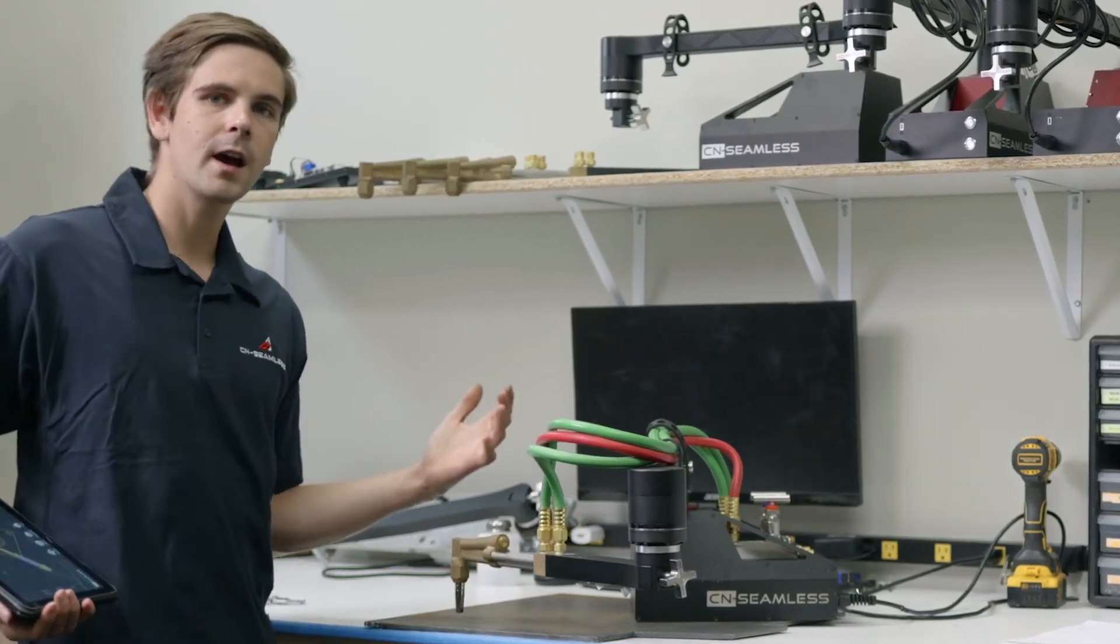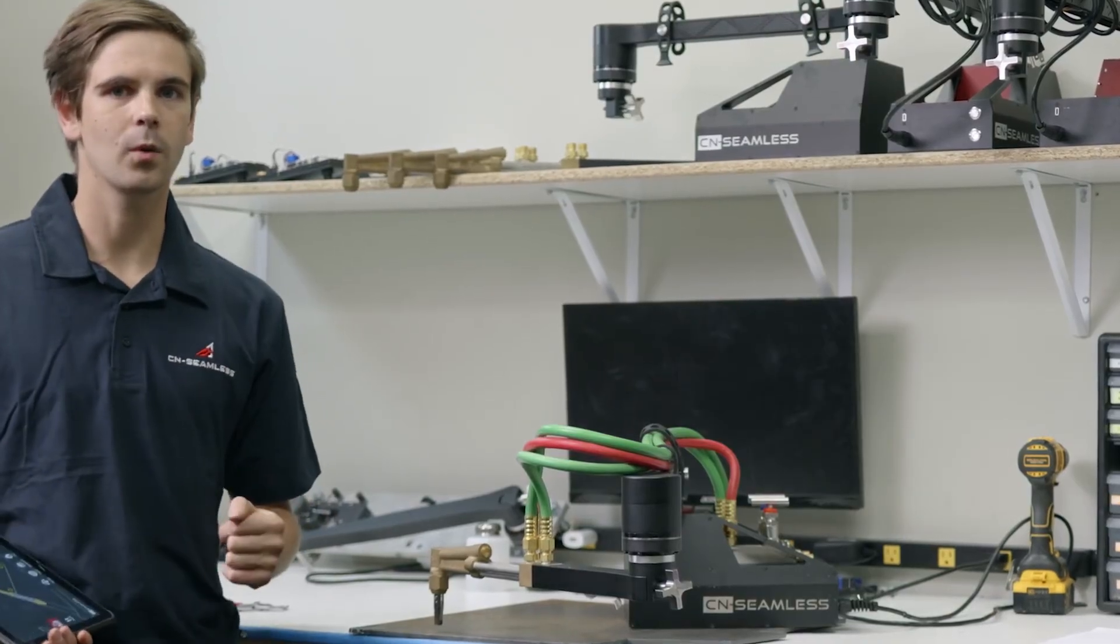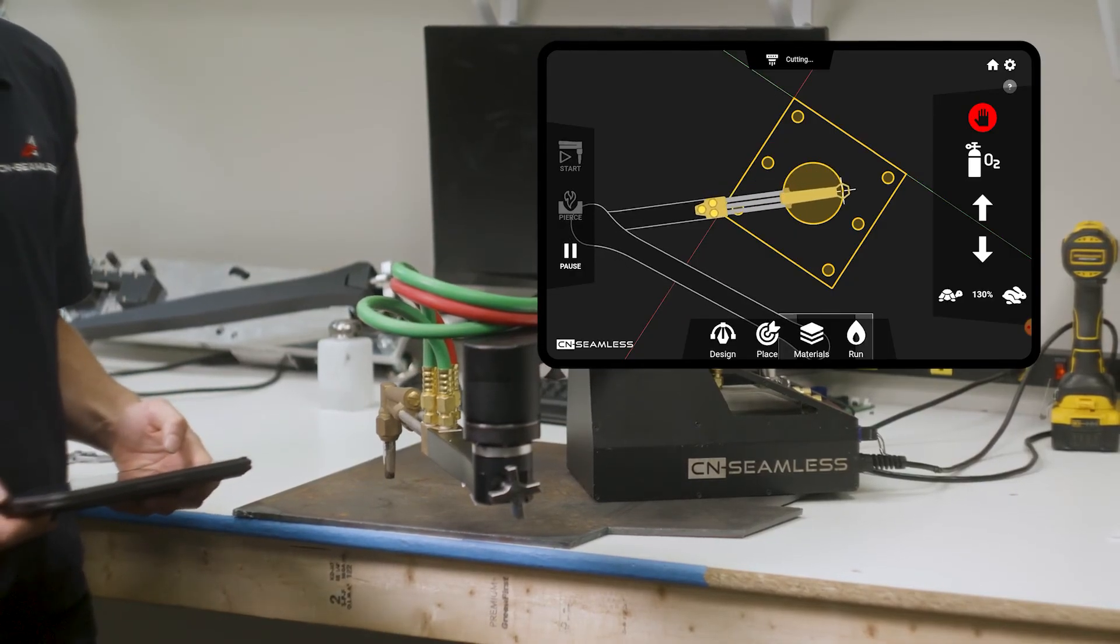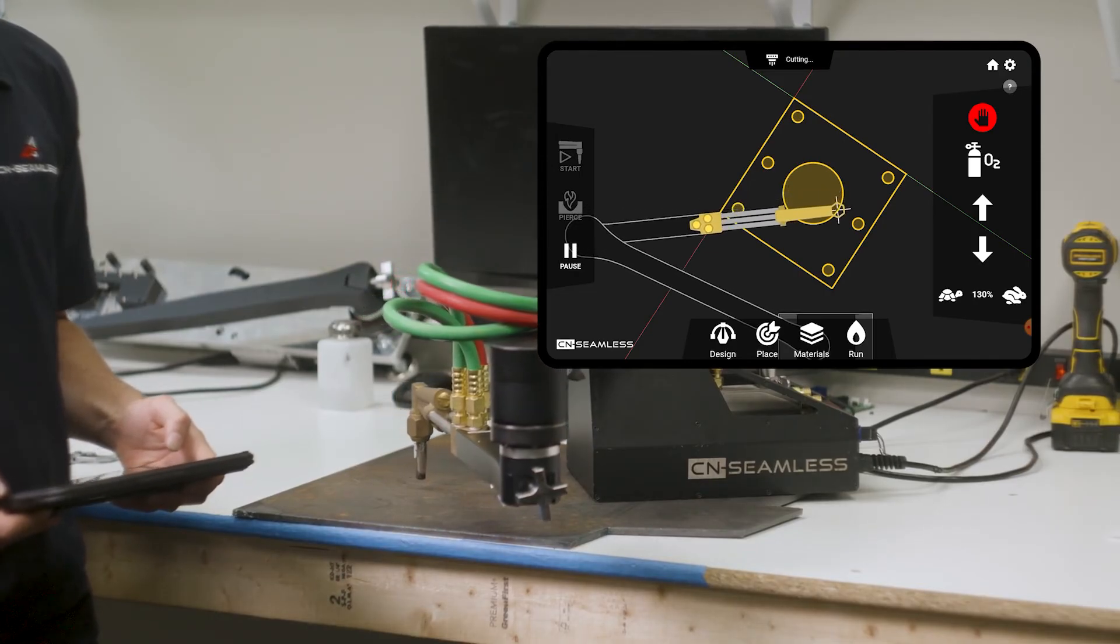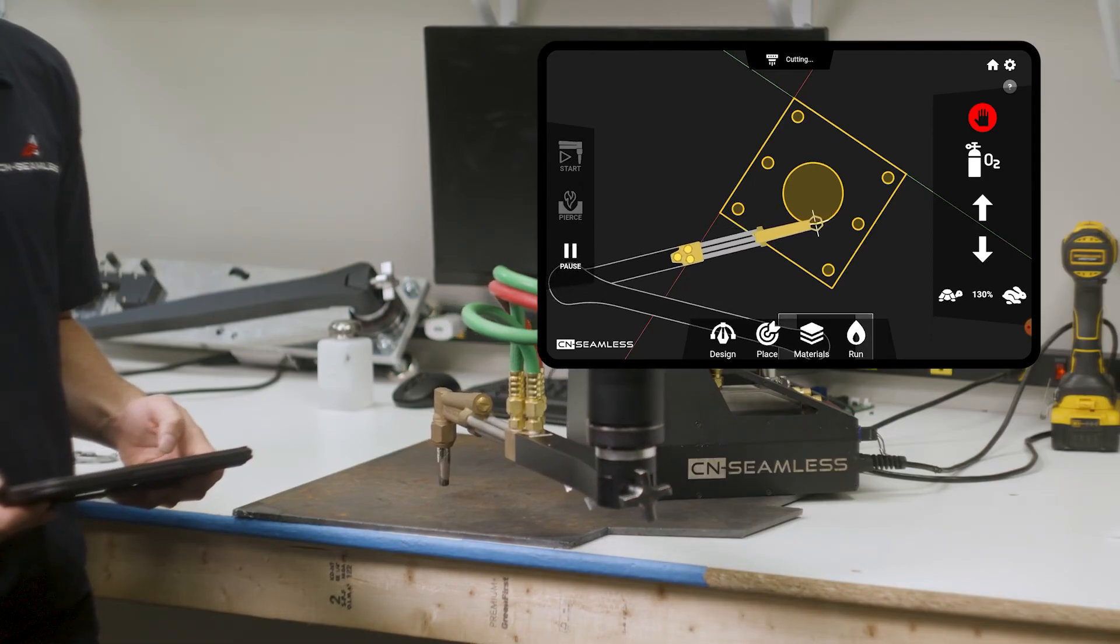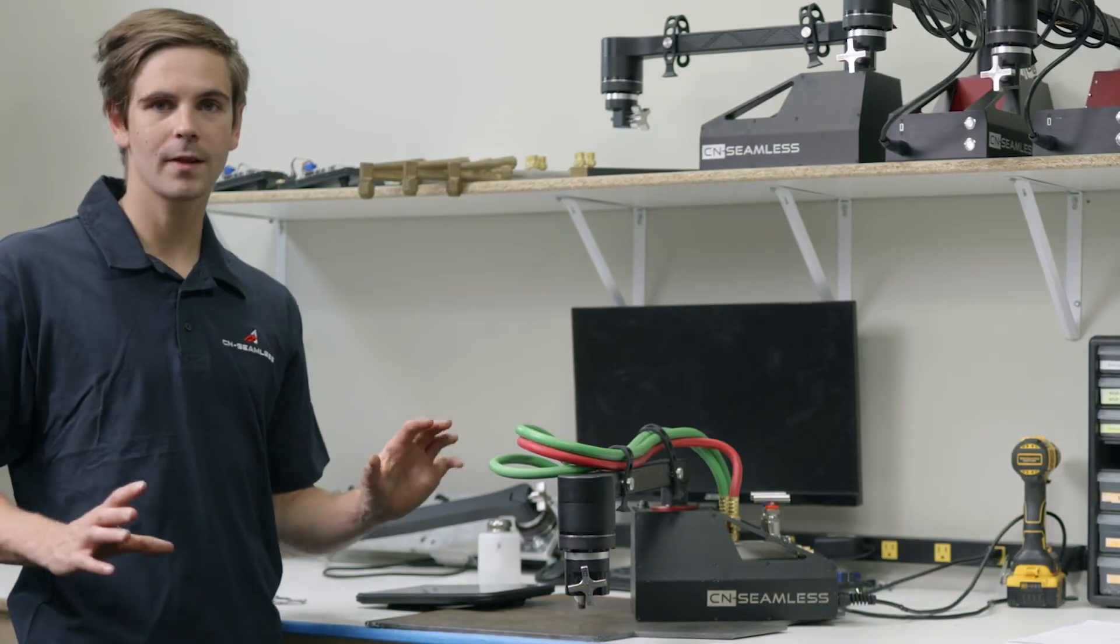Now let's say you have a cut that has even more holes than this and you want to be able to just set this thing and walk away. What you can do for that is time how long it takes for it to preheat the material and then set the preheat time in your materials. What that's going to let you do is it's going to pierce automatically after it preheats for the set amount of time. So for the very first pierce, it's not going to use that timer.